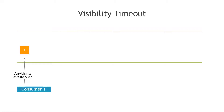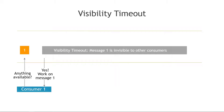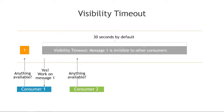Another important concept is visibility timeout. When a consumer pulls the queue and picks up a message, that message becomes invisible to other consumers while it's being processed. By default, the visibility timeout is set to 30 seconds. So if consumer two or consumer three comes along asking for messages, the response is that nothing is available, because the message is still invisible.